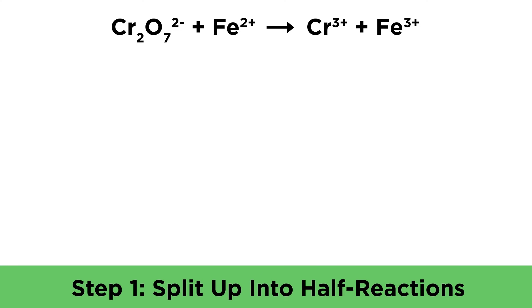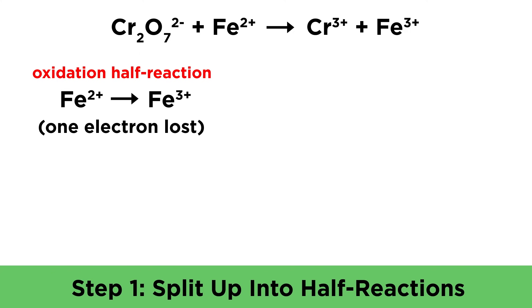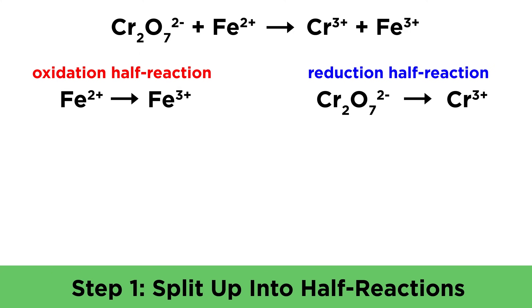The first step is to split this up into half reactions. For the oxidation half reaction, iron two plus becomes iron three plus. This is the oxidation half reaction because the iron has lost another electron. For the reduction half reaction, dichromate becomes chromium three. We can see by looking at the oxidation numbers for chromium that it has been reduced.